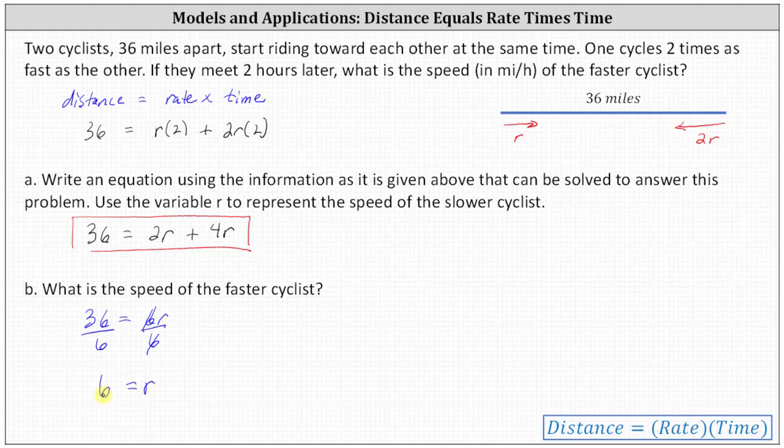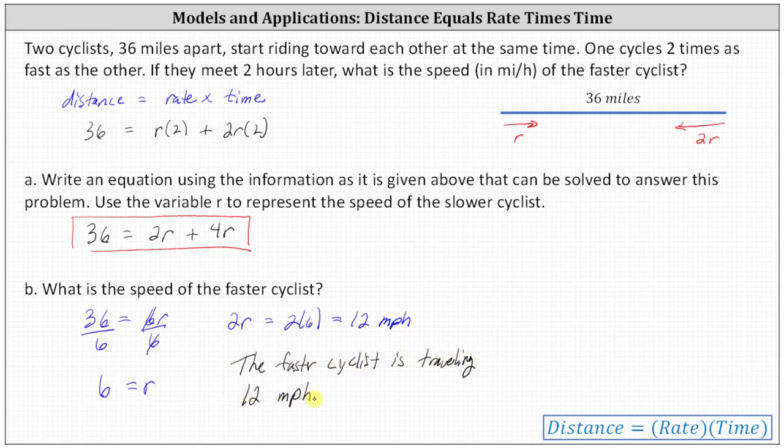We now know the slower cyclist is traveling six miles per hour, but again, the faster cyclist is traveling 2R miles per hour, which is two times six, giving us 12 miles per hour. As a complete sentence, the faster cyclist is traveling 12 miles per hour. I hope you found this helpful.